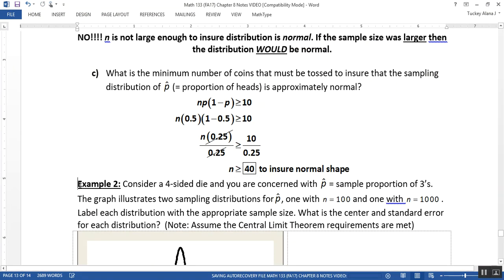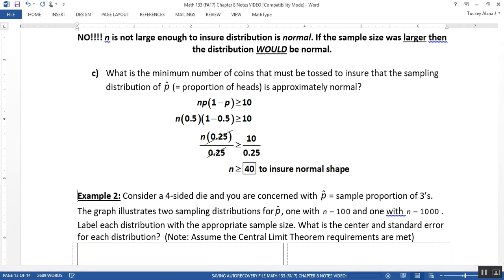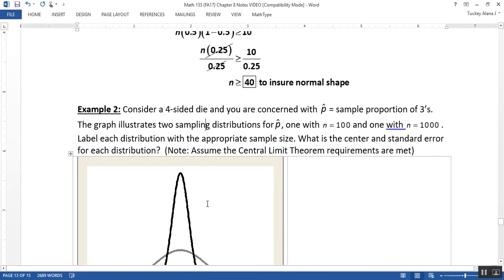I just added that to ensure normal shape. So to ensure that the shape is normal, we just solved that N must be greater than or equal to 40 if the P, the proportion, is 0.5.